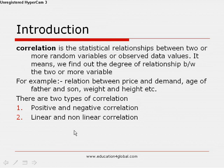In linear and nonlinear correlation, if we draw a diagram from the pair of data and all the dots follow a straight line, then this correlation is linear correlation. Otherwise, the correlation is nonlinear — that is, if all dots do not follow a straight line, it is called nonlinear correlation.